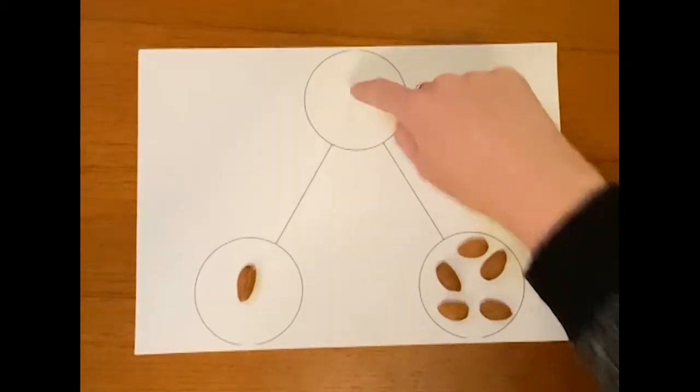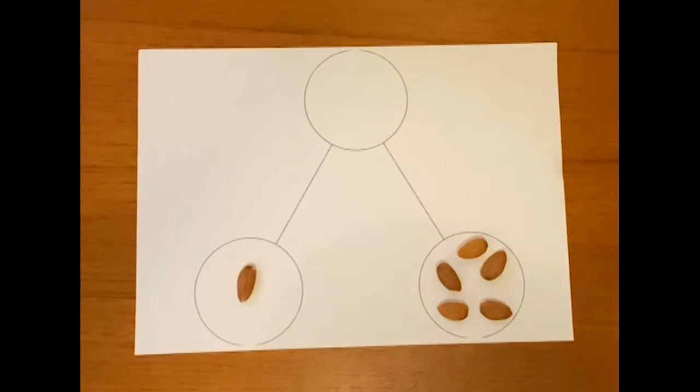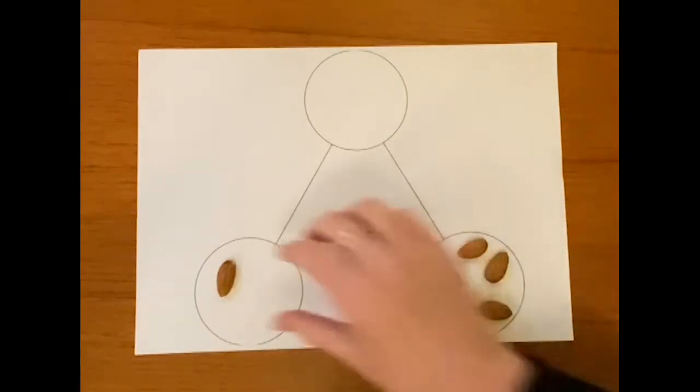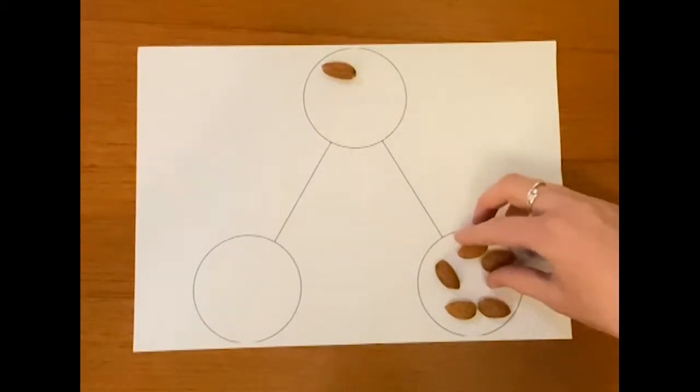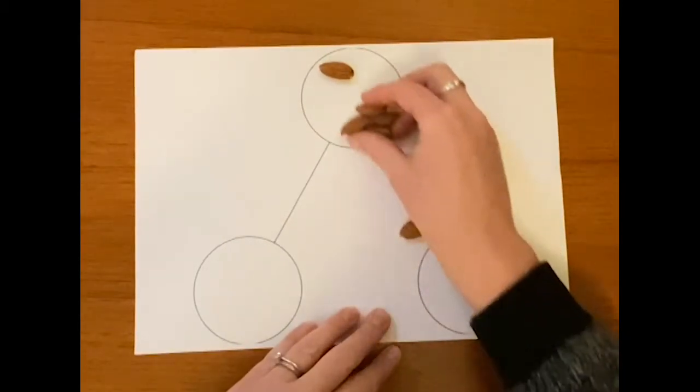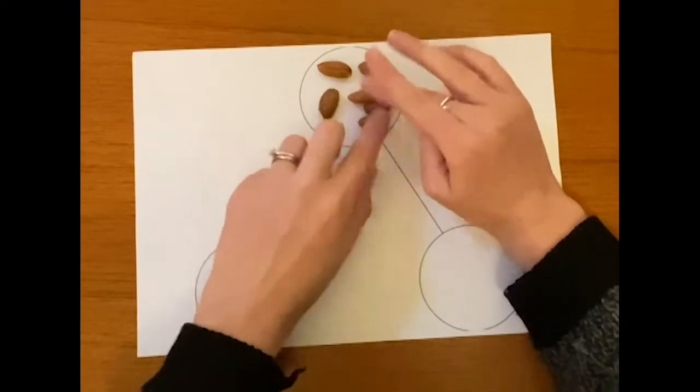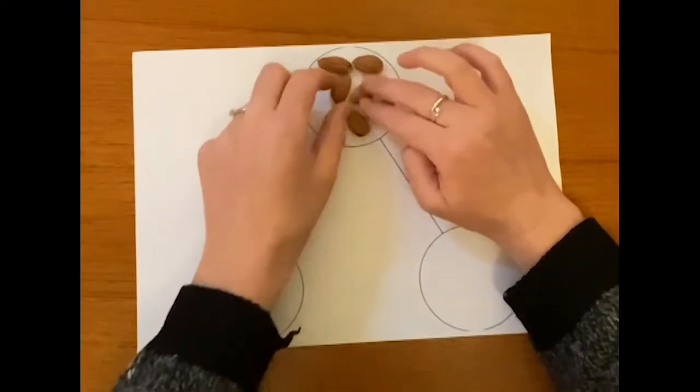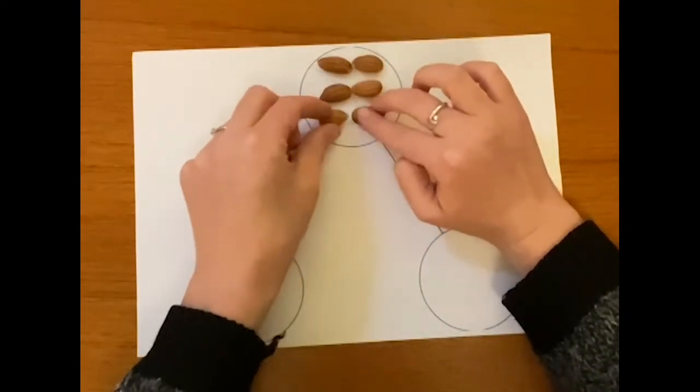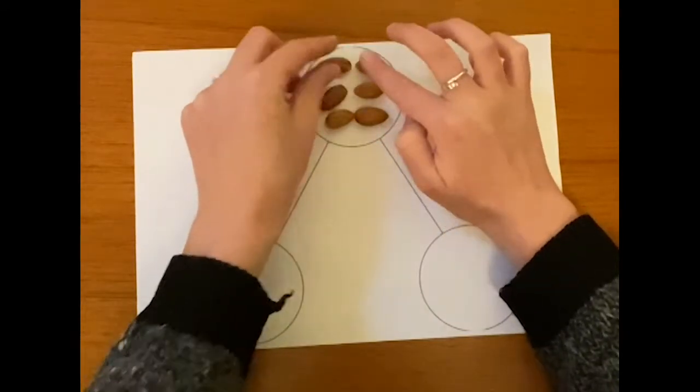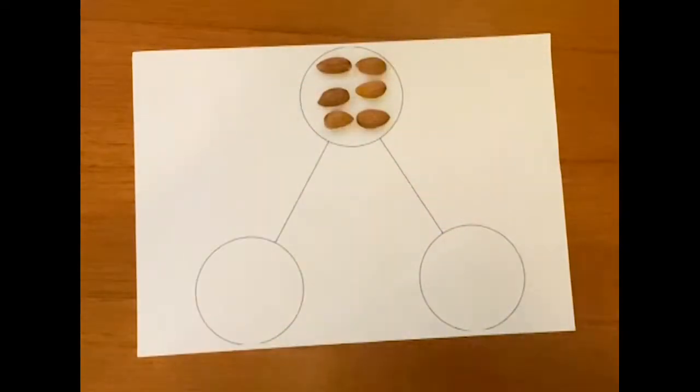So I've got one nut and five nuts. How many did I have altogether? How many did I have at the beginning? That's right. I had six, didn't I? So one nut plus five nuts, one nut from there. And if I take all these five nuts back up here, we know there's six. Going to make them look like little dice dots. There we go.